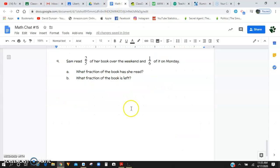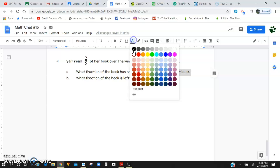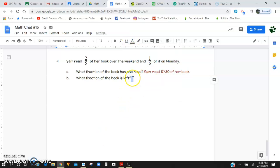So over here on my problem, I'm going to write down Sam read 17 30ths of her book. And I'm going to make that a different colored font just so you guys can see my work. There we go. So we know that she's read 17 30ths of her book.